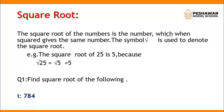Square means when a number is multiplied by itself, the result is called the square of the given number. For example, 4² = 4 × 4 = 16, so 16 is called the square of 4. Similarly, 5² = 5 × 5 = 25, so 25 is called the square of 5.